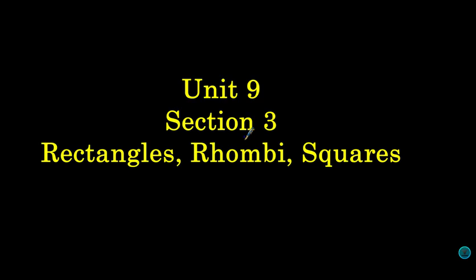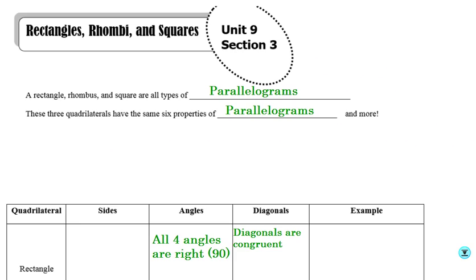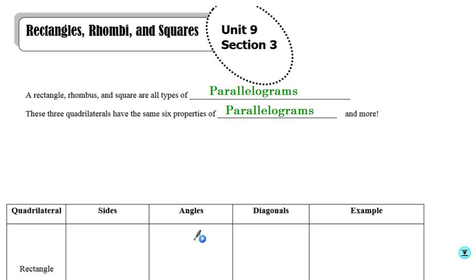Hey, it's Mr. Lineski, and we are looking at section 3 today of unit 9. We're looking at rectangles, rhombi, and squares. Last section, we talked about parallelograms and their properties. So now we're going to look at some of the properties of rectangles, rhombi, and squares. Rectangles, rhombuses, and squares are all different types of parallelograms.